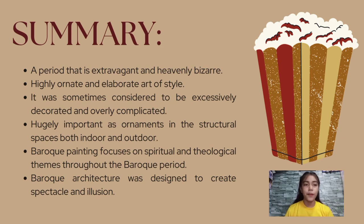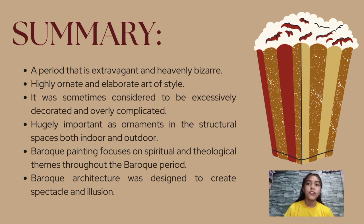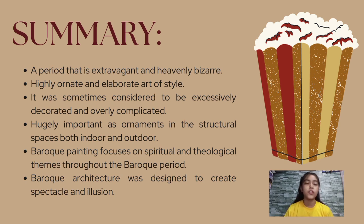We are now done discussing the topics under Baroque art. To summarize everything we have discussed, these are the key points: We learned that this is a period that is extravagant and heavenly bizarre. It is a highly ornate and elaborate art style. While it was sometimes considered excessively decorated and overly complicated, it is hugely important as ornamentation in structural spaces both indoors and outdoors. Baroque painting focuses on spiritual and theological themes throughout the period. And lastly, Baroque architecture was designed to create spectacle and illusion.